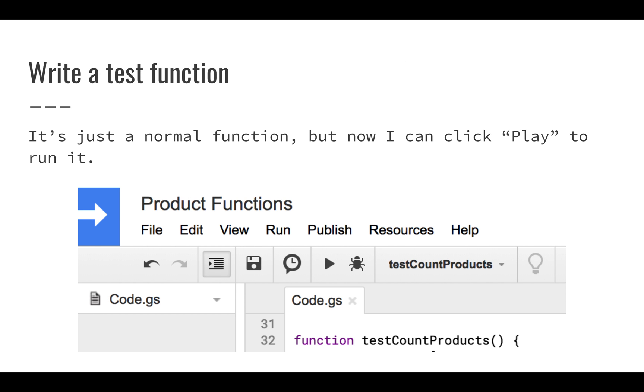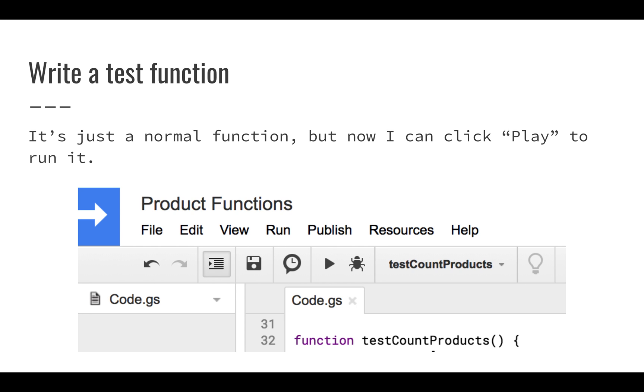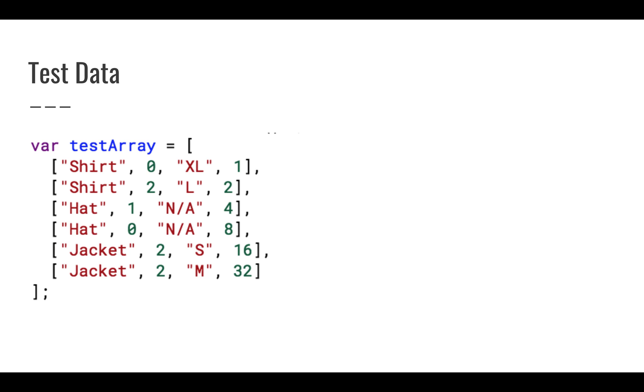If I create this in my script editor, I can use this test count products function and then I can run it using that play button. So now, instead of having to enter this into my spreadsheet, I can very easily run this test function. That's going to do something interesting. For example, I could just create this two-dimensional array that is basically just like my spreadsheet.